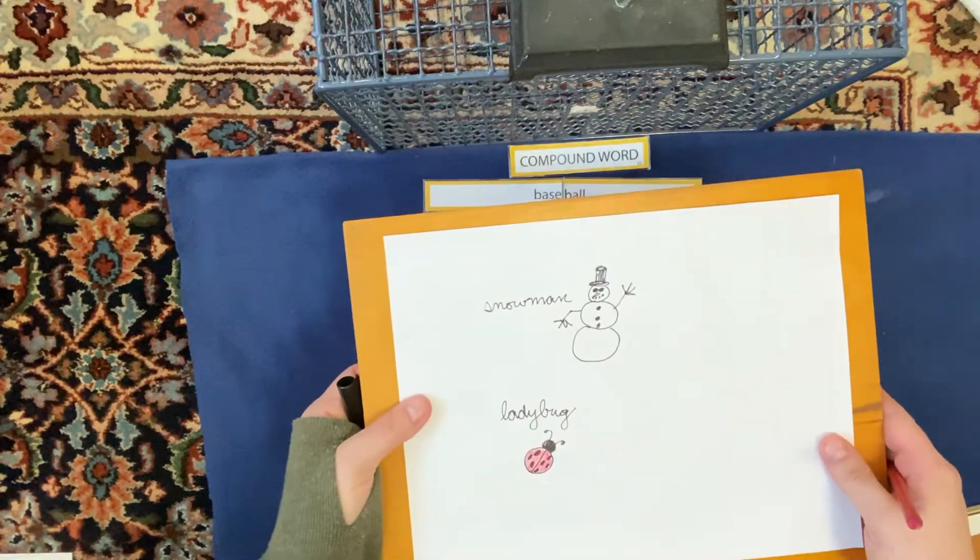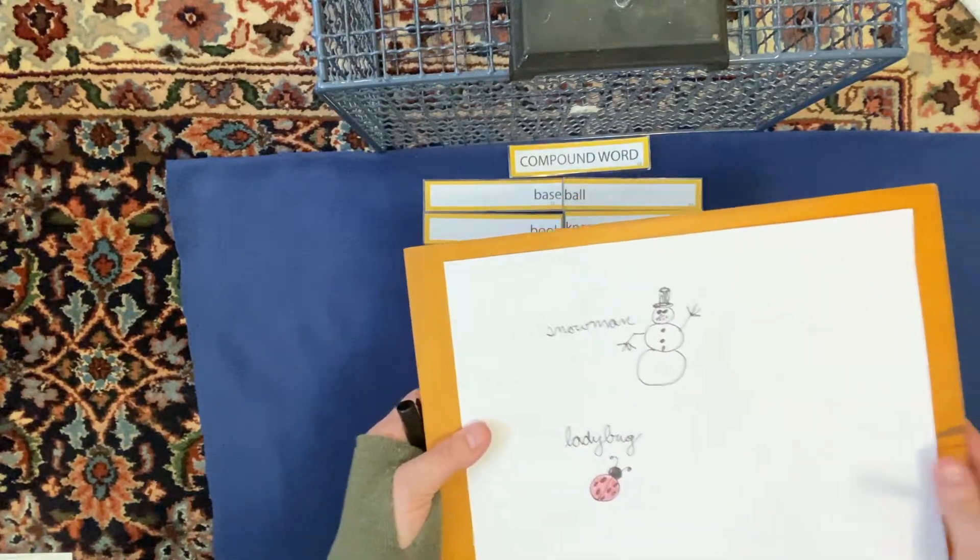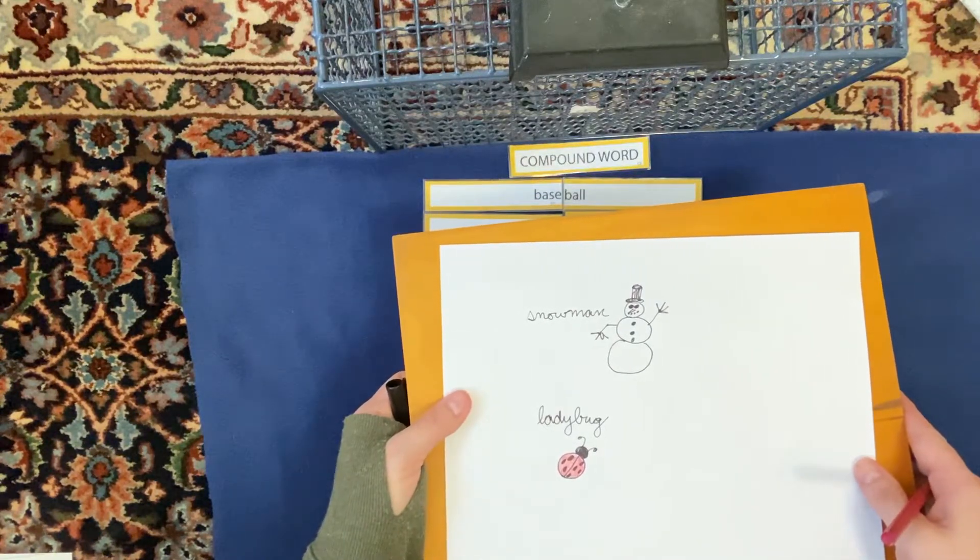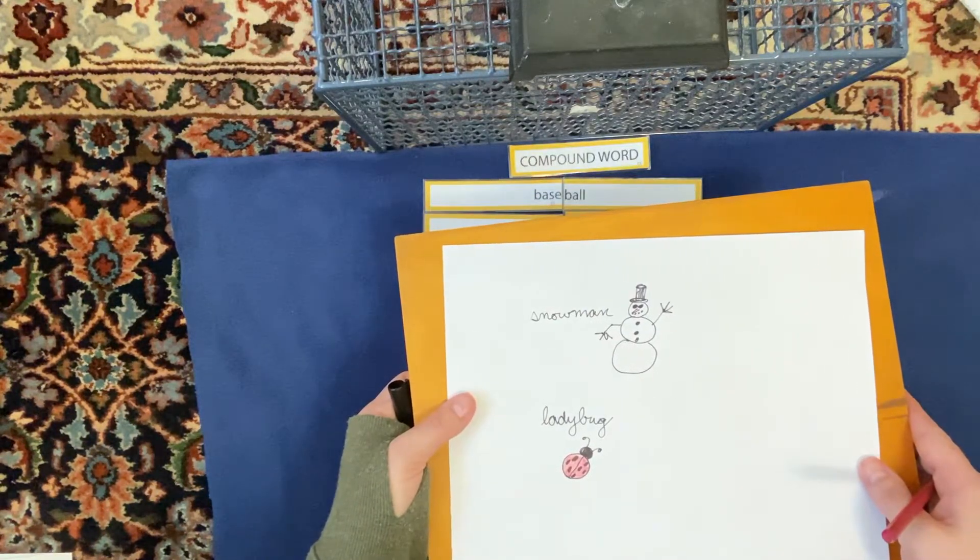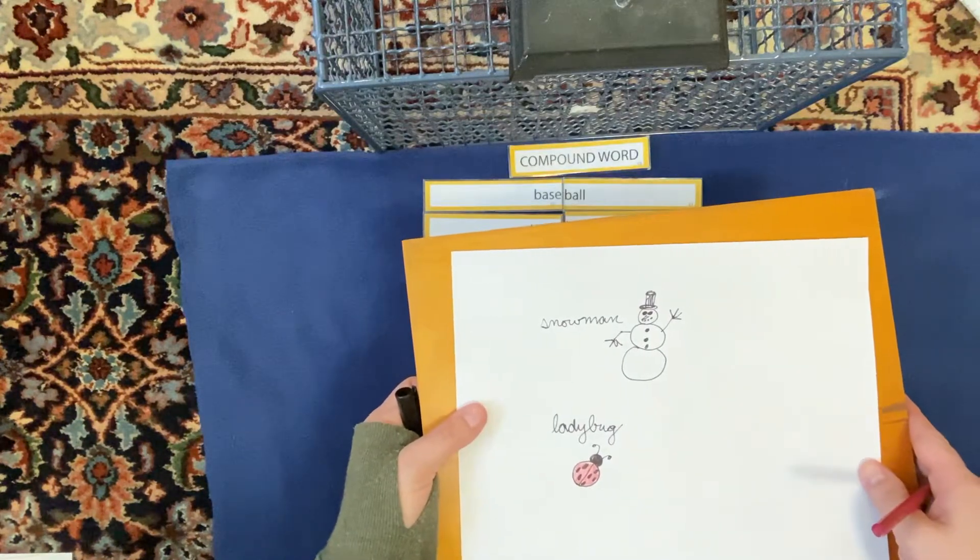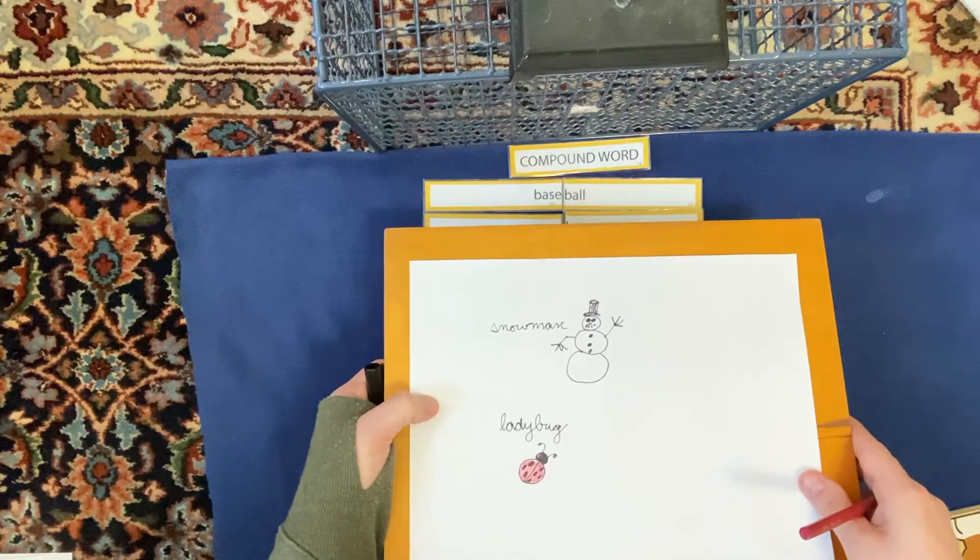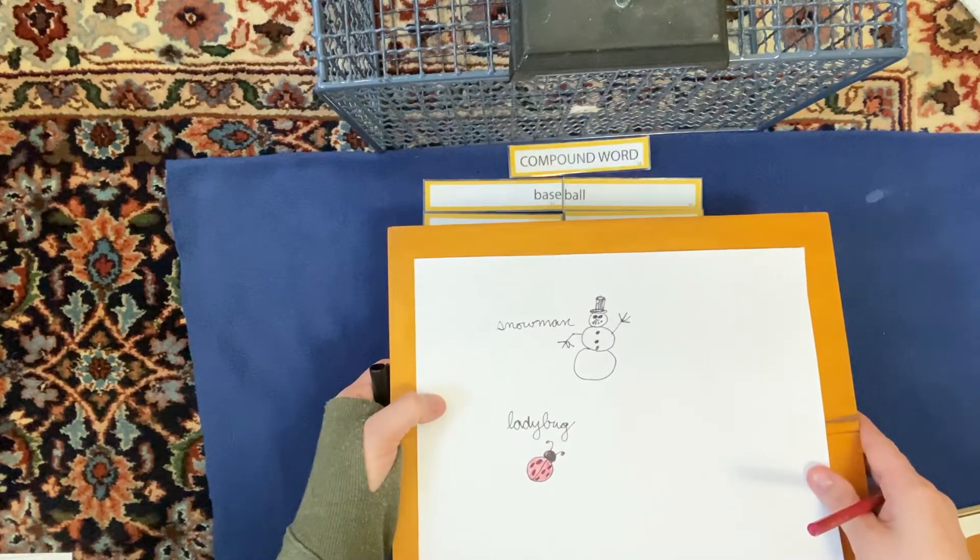So, if you want, if you have a word collection book, you can go ahead and write some of these compound words down. All right? And then you can draw pictures of it. You could even try to make up some of your own silly compound words. That would be kind of fun, wouldn't it? We are makers of words. Language is a living organism. Very cool.